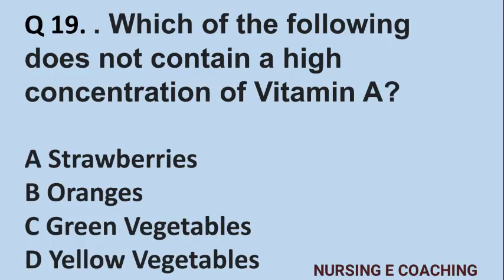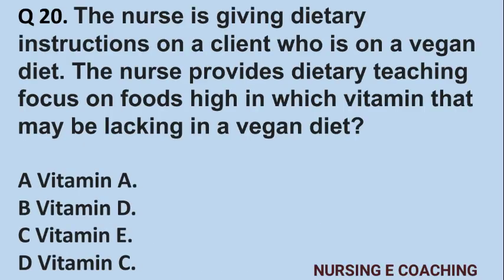Question number 19: Which of the following does not contain a high concentration of Vitamin A? A) Strawberries, B) Orange, C) Green vegetables, D) Yellow vegetables. Answer is C) Green vegetables.